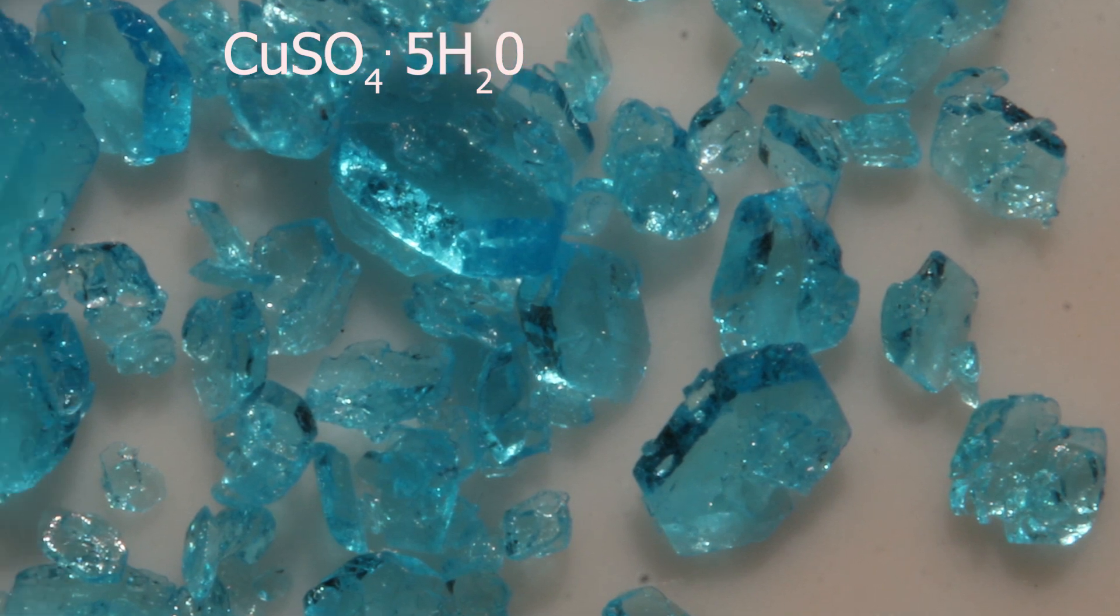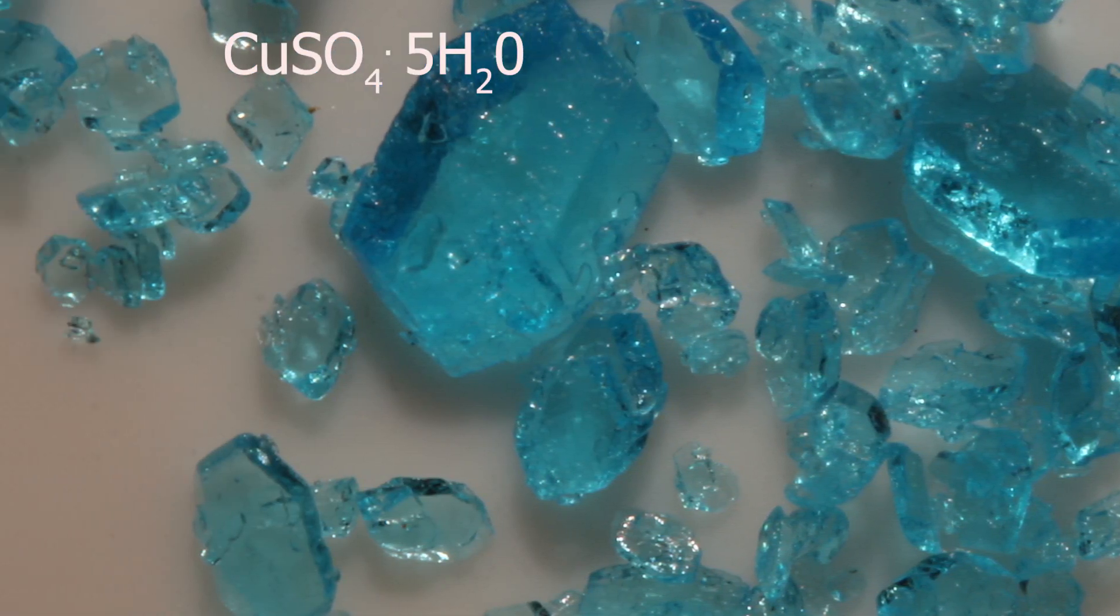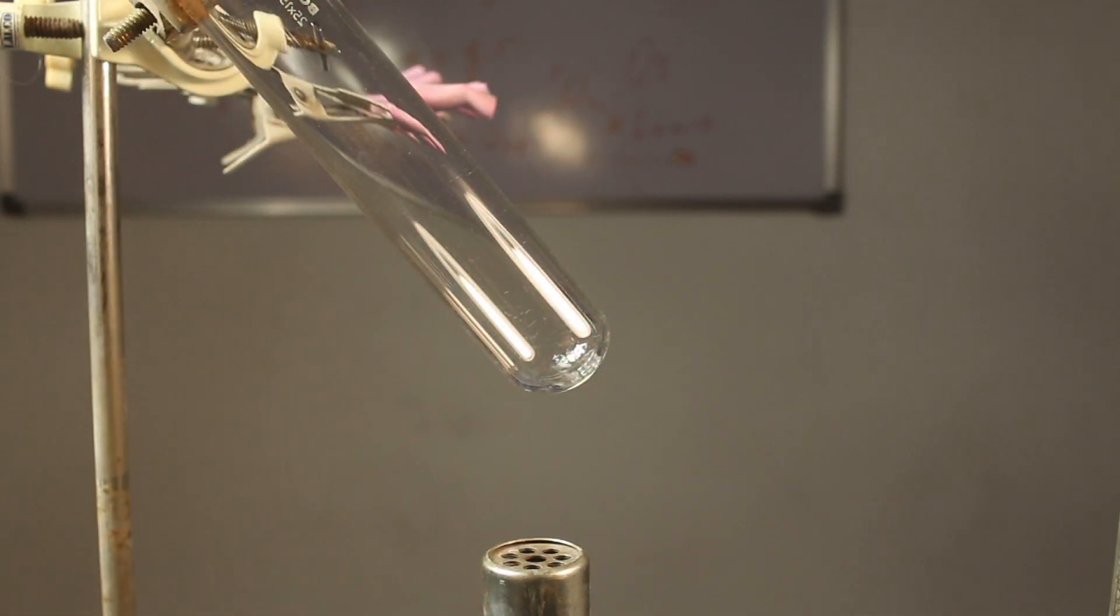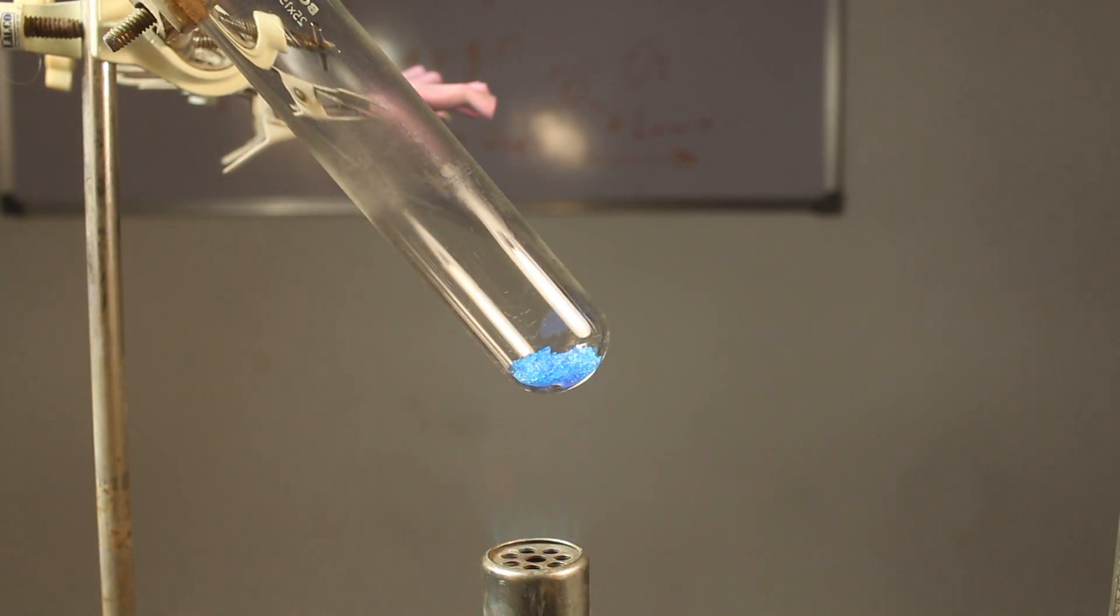Blue crystals of copper sulfate - you see in the formula it is associated with five molecules of water. Five moles of water per one mole of copper sulfate. This is water of crystallization, an integral part of the crystals. Let's try to drive it out by heat.